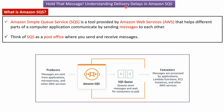In this video tutorial, I will explain what delivery delays are in Amazon SQS. Amazon SQS is a tool provided by Amazon Web Services that helps different parts of a computer application communicate by sending messages to each other. We can think of SQS as a post office where you can send and receive messages.